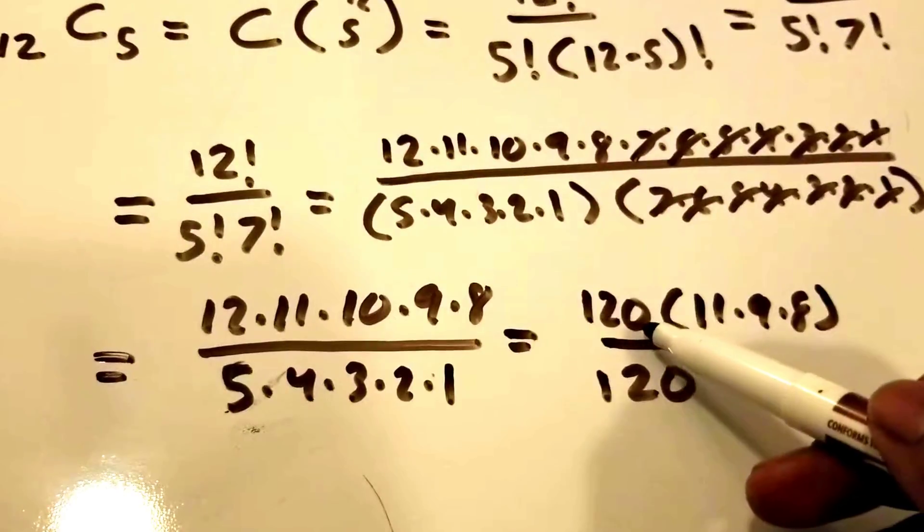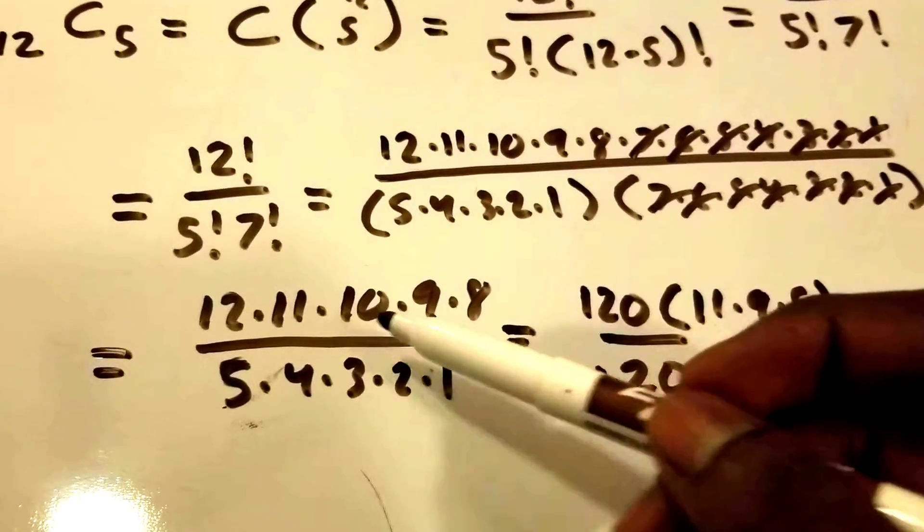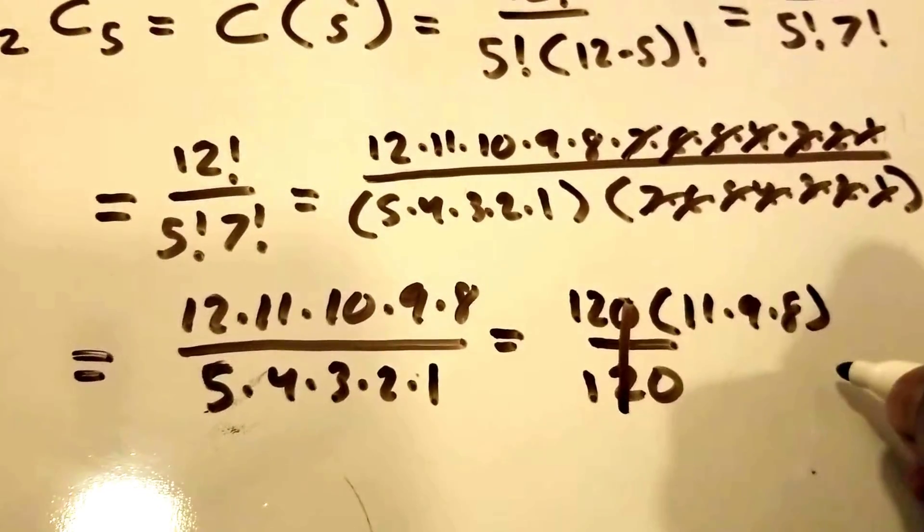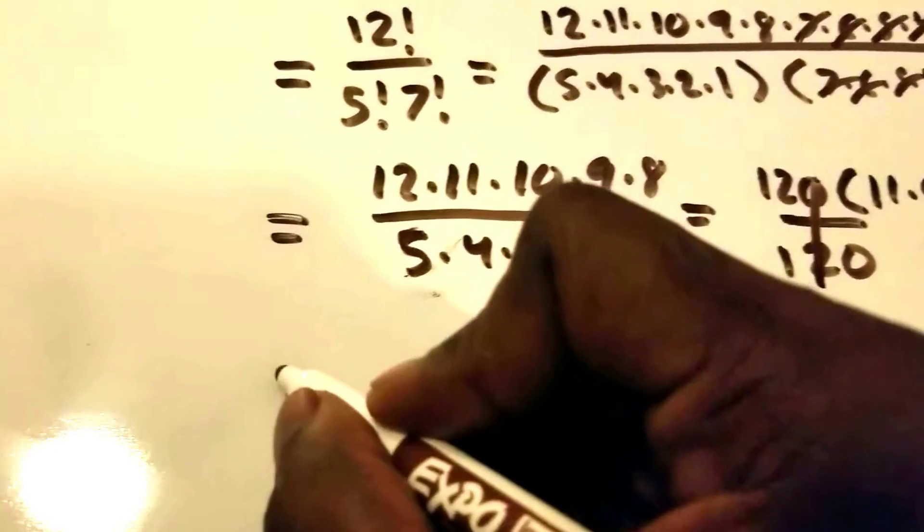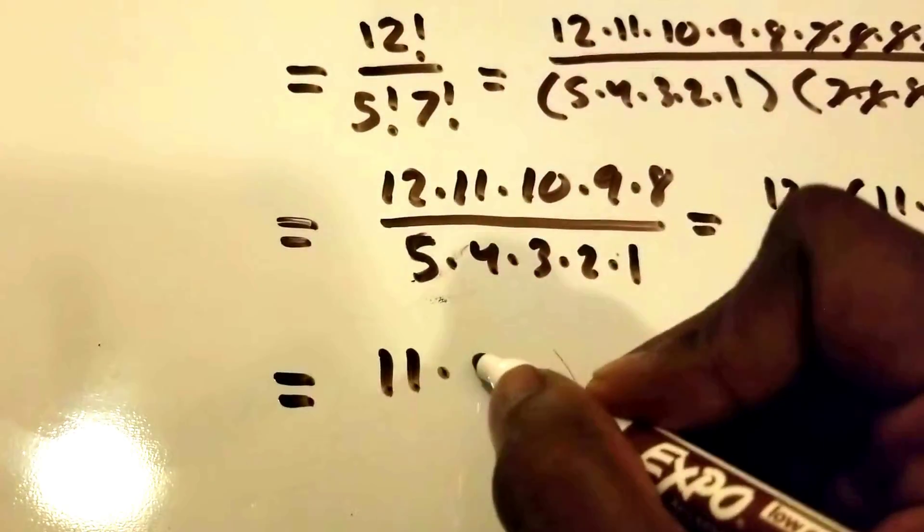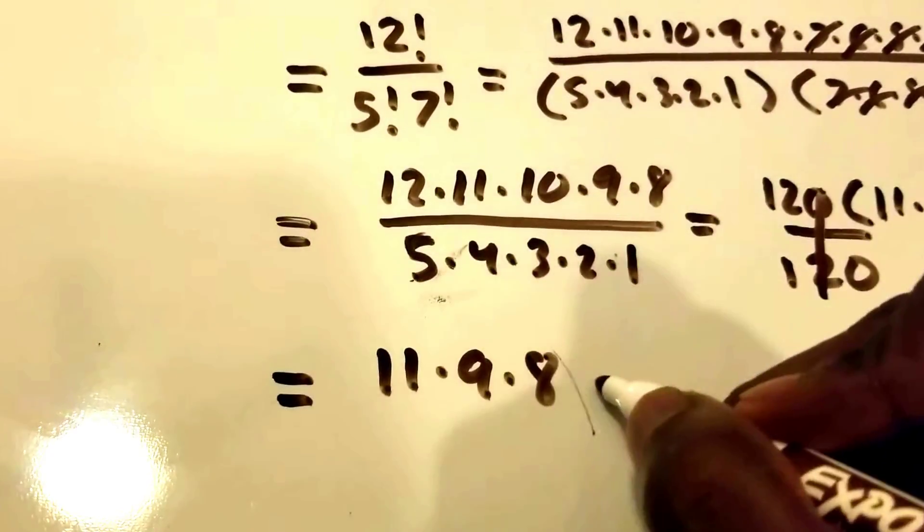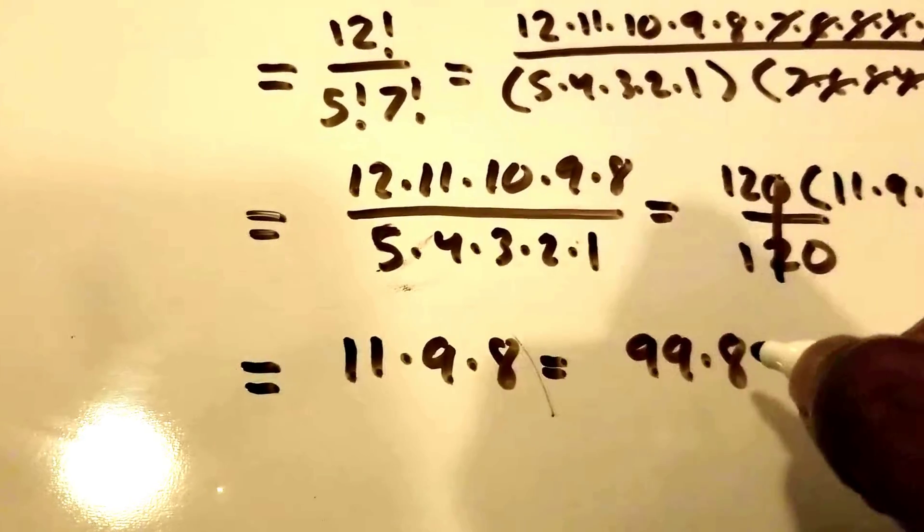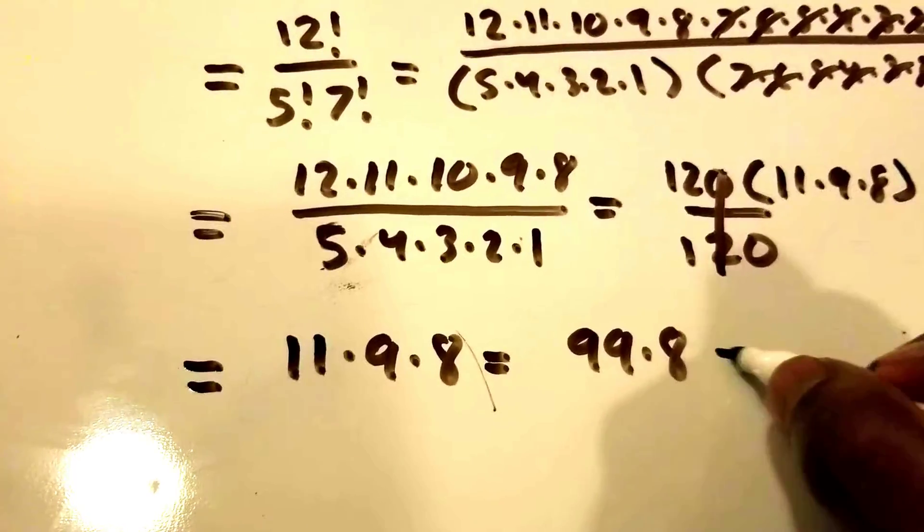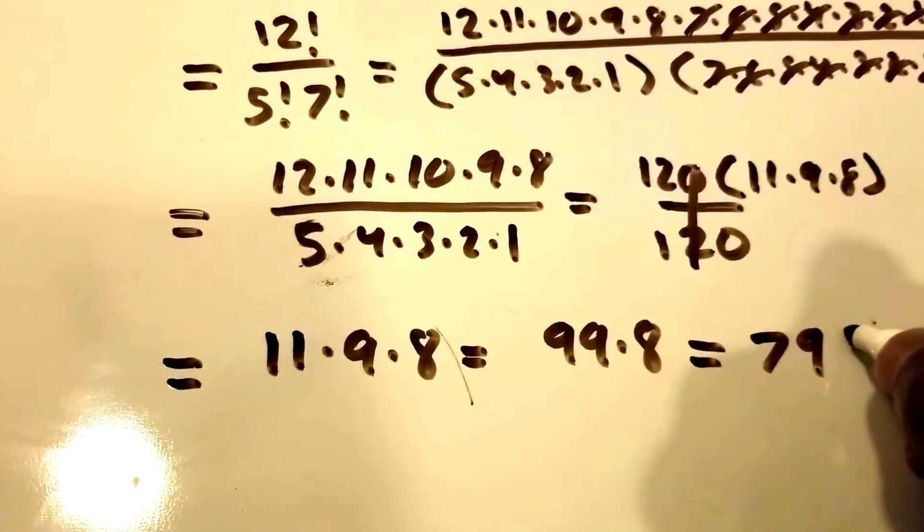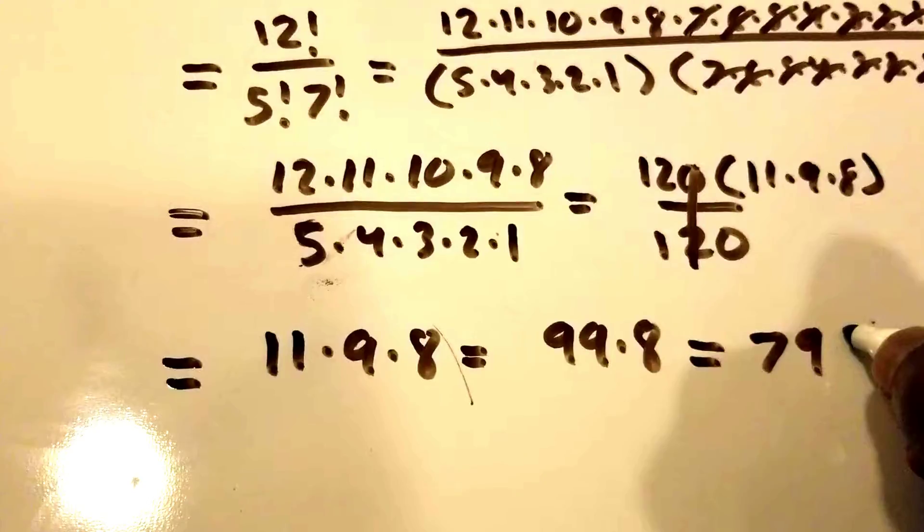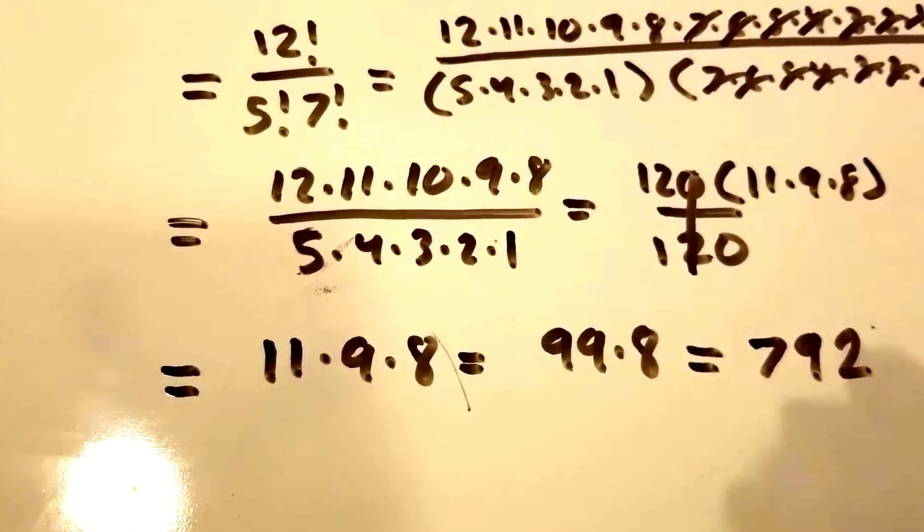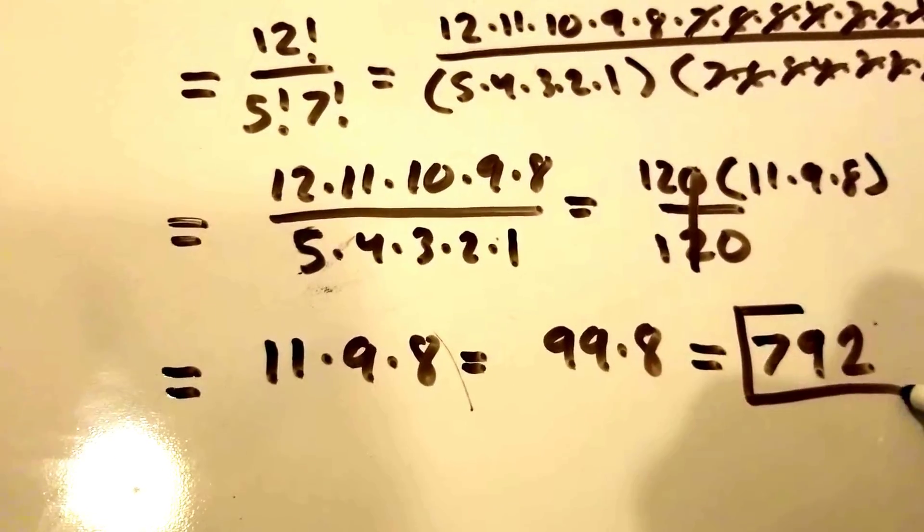All I did here was multiply the 12 and the 10 on top. This is going to divide out very nicely for us. Now all we have is 11 times 9 times 8. This equals 99 times 8, and that equals 792. That's our answer.